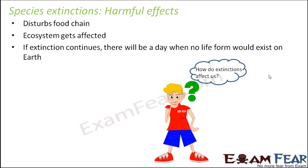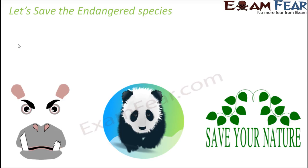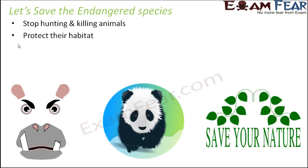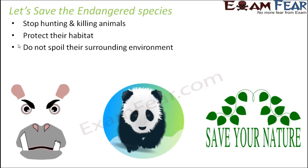How do extinctions affect us? The harmful effects impact the environment, the entire ecosystem, and the planet Earth — and this impact ultimately comes to us because we are a part of this planet, this ecosystem, and the food chain. Knowing these harmful effects, it is high time we save the endangered species. We can do that by stopping hunting and killing of animals — that is why protected areas have been created. We should protect their habitat, not spoil the surrounding environment, and by doing these simple things we can ensure that all animals and plant species are safe and prevent them from becoming extinct.